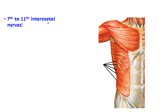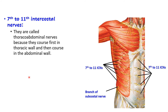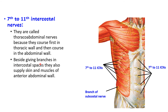The 7th to 11th intercostal nerves are also called thoracoabdominal nerves because they course first in the thoracic wall and then run in the anterior abdominal wall. Besides giving branches in the intercostal spaces to the intercostal muscles and skin over the intercostal spaces, they also supply the skin and muscles of the anterior abdominal wall.